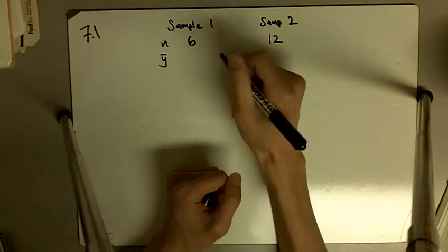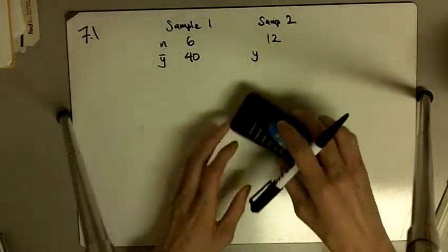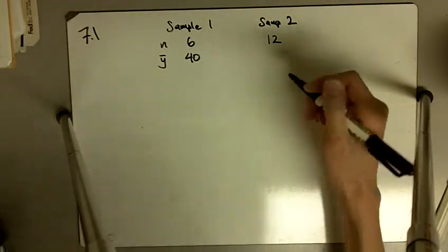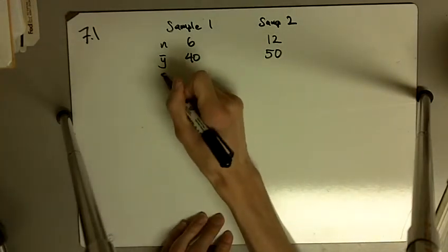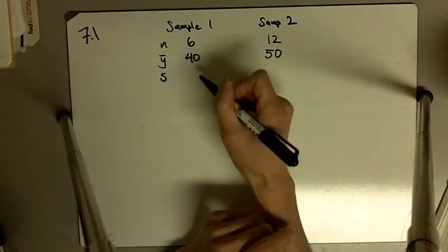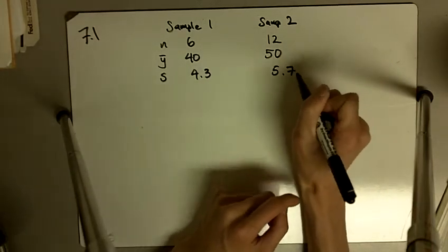The sample mean of sample 1 was 40. Sample mean of sample 2, I don't need to rewrite this, is 50. The standard deviation of sample 1 was 4.3 and the standard deviation of sample 2 was 5.7.